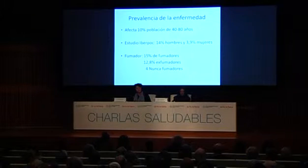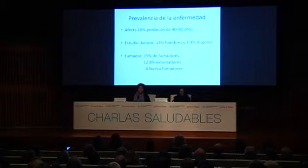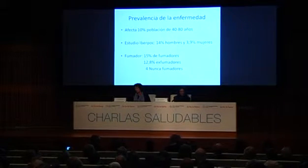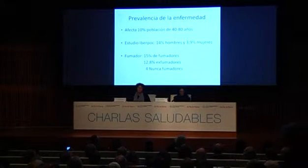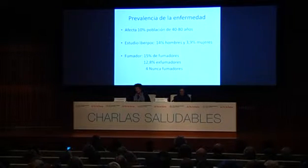What is the prevalence of this disease? It is quite frequent — it affects 10% of the population between 40 and 80 years old. It is not a disease of young people; it generally appears from age 40. Some studies say it affects men more: 14% of men and 4% of women, though this depends on where we live. In the United States, for example, it affects men and women almost equally, because women smoke as much as men.